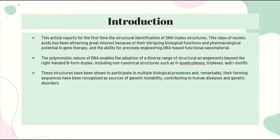The polymorphic nature of DNA enables the adoption of a diverse range of structural arrangements beyond the right-handed B-form duplex, including non-canonical structures such as G-quadruplexes, triplexes, and i-motifs. These structures participate in multiple biological processes, and remarkably, their forming sequences have been recognized as sources of genetic instability contributing to human diseases and genetic disorders.